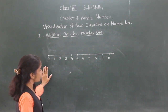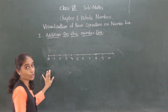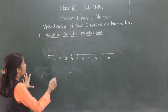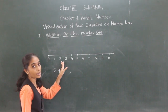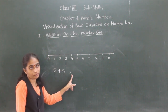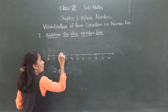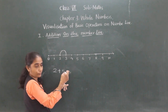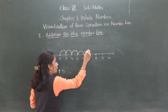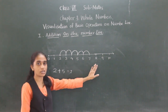Now let's look at addition on the number line. Let's find the addition of 2 and 5. We start from 2 and make 5 jumps to the right: 1, 2, 3, 4, 5. So the answer we get is 7. That is addition on the number line.